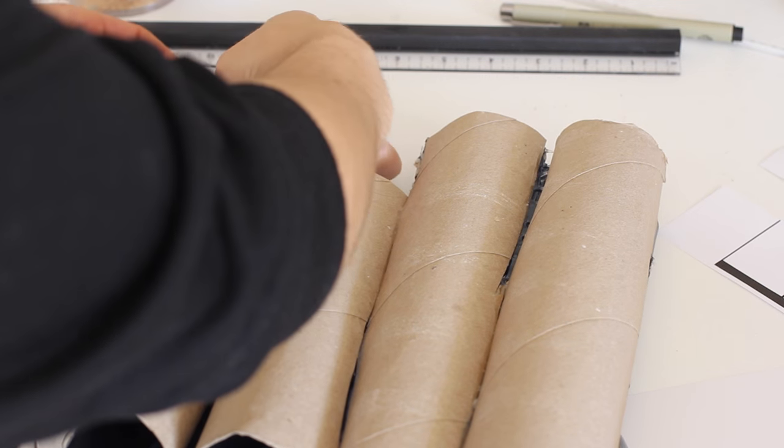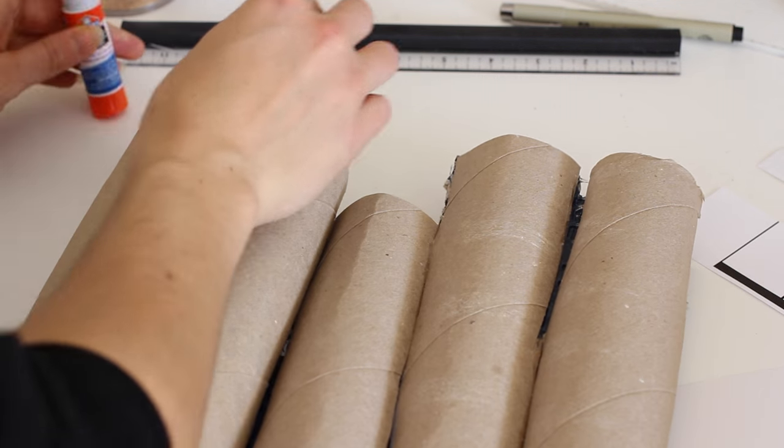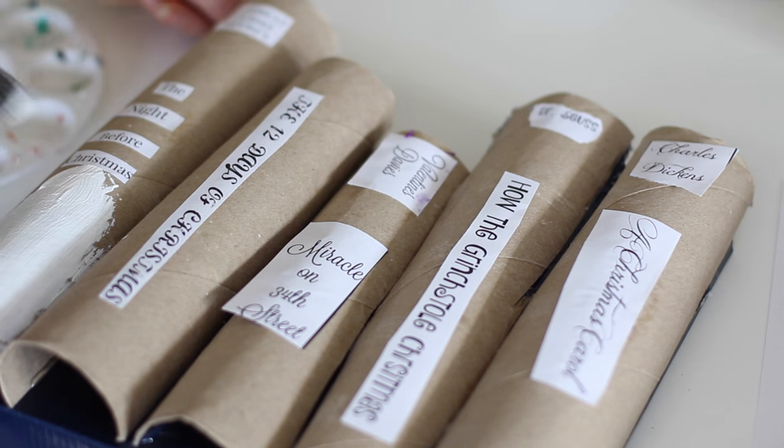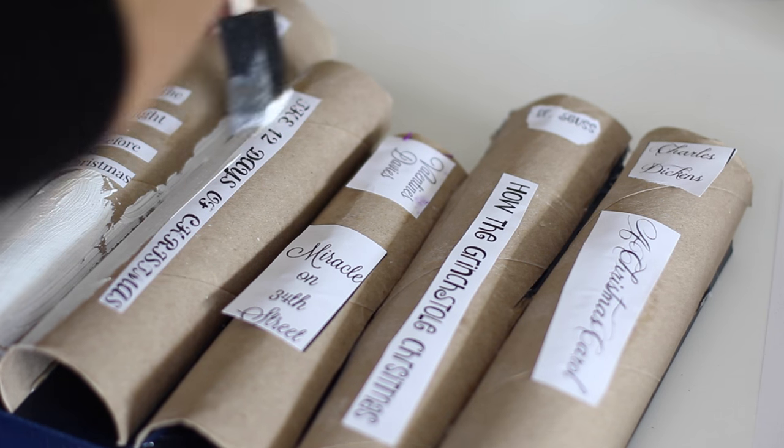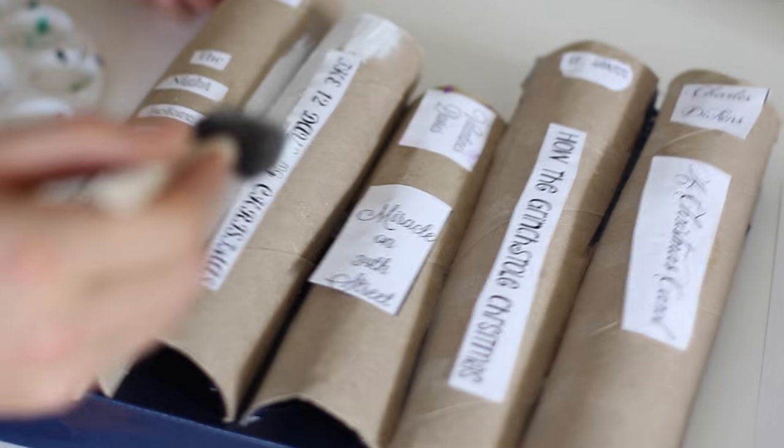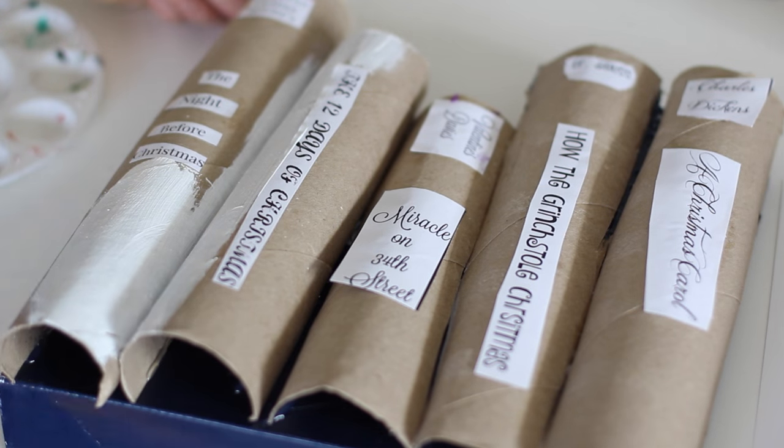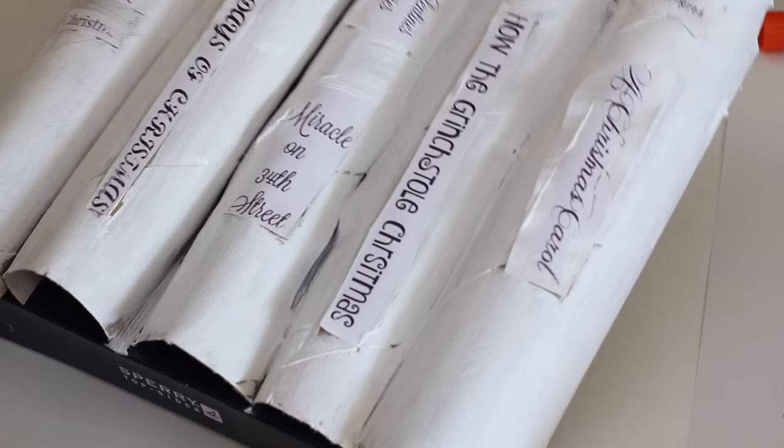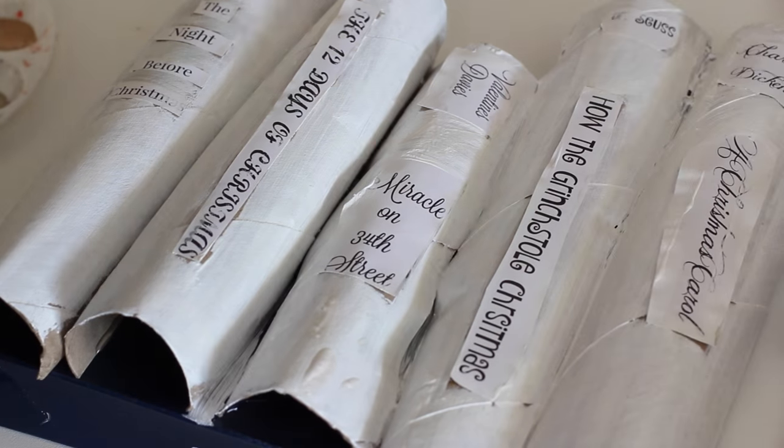I didn't really worry too much about how they were going to look on there because I am covering them regardless with paint. The paint is just so that I have a nice base for decorating the rest of the books. I wanted them to look super ornate so I chose just a white color so that all of the different textures that I put on there really popped.